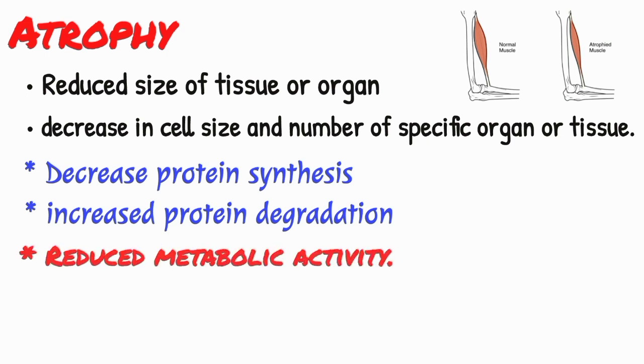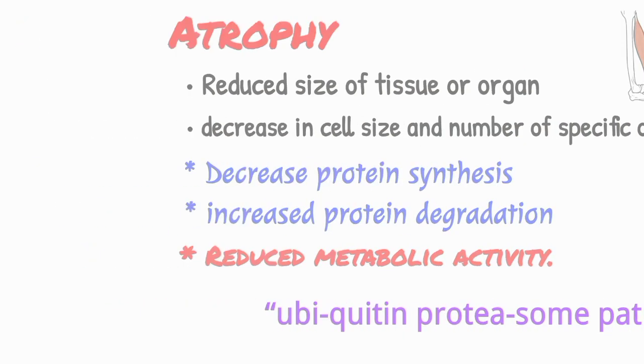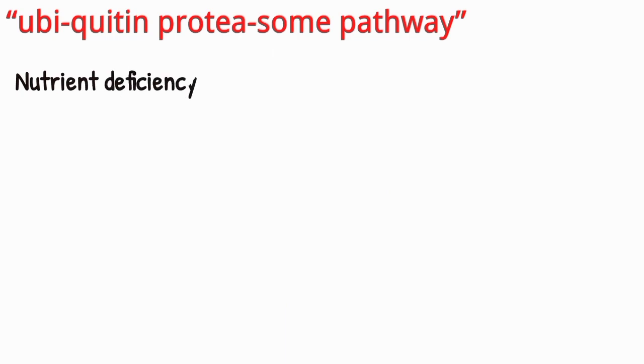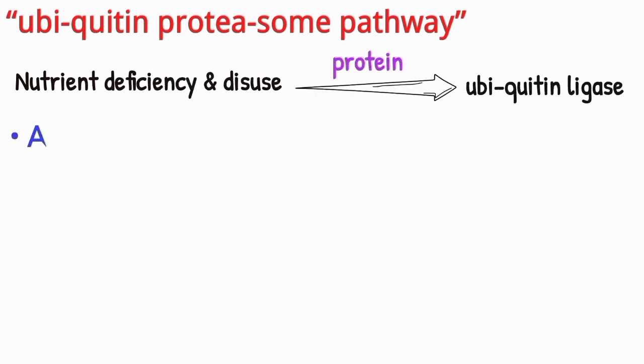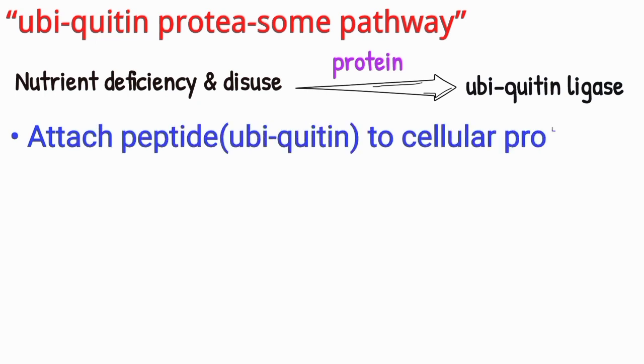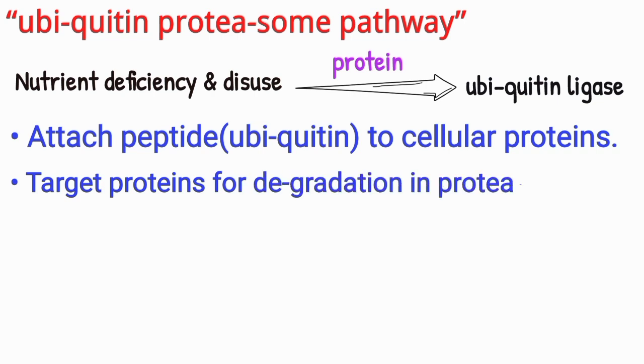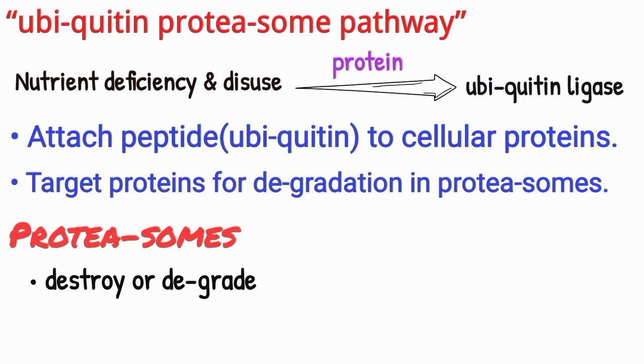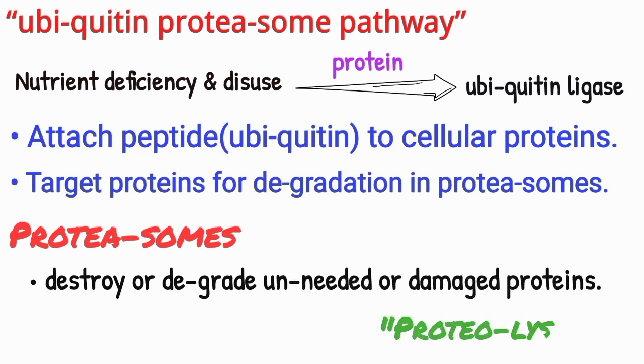The degradation of cellular proteins occurs mainly by the ubiquitin proteasome pathway. Nutrient deficiency and disuse may activate ubiquitin ligases, which attach the small peptide ubiquitin to cellular proteins and target these proteins for degradation in proteasomes. Proteasomes basically destroy or degrade unneeded or damaged proteins by a process called proteolysis.